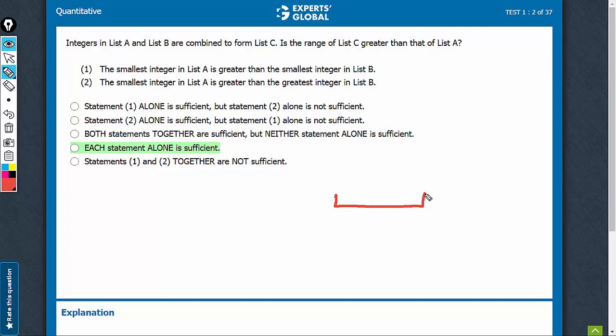There's list A and there's list B. The two have been combined to form the bigger list C. And we have to tell whether the range of C is greater than the range of A.